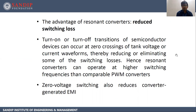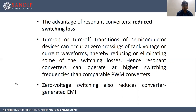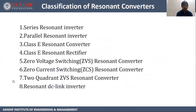What are the advantages of resonant converters? Reduced switching loss. Turn on or turn off transitions of semiconductor devices can occur at zero crossing of tank voltage or current waveforms, thereby reducing or eliminating some of the switching losses. Hence, resonant converters can operate at higher switching frequencies than comparable PWM converters. Zero voltage switching also reduces converter-generated EMI.